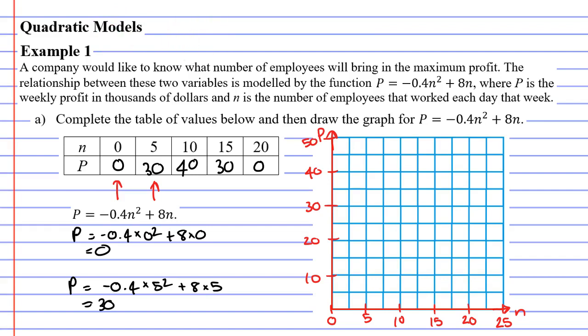So let's label our points now. In our first column here, we have when n is 0, P is 0. So that's right down at our corner. Then when n is 5, P is 30. We'll label that here. When n is 10, P is 40. When n is 15, P is 30. And when n is 20, P is 0.